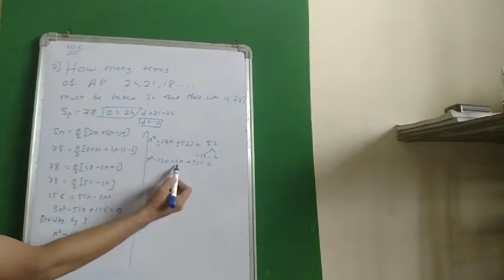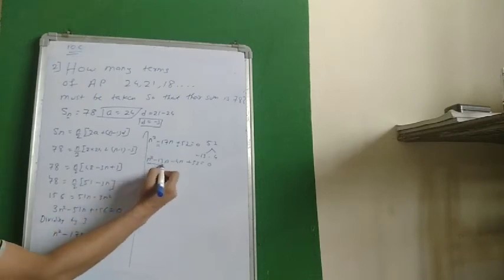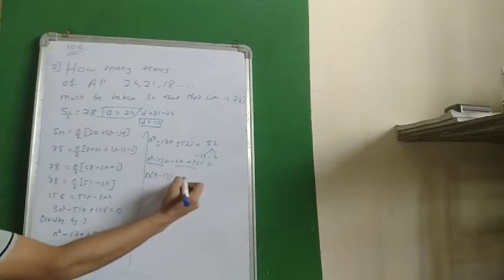Cross check it. Minus 13N minus 4N should give me minus 17N. Yes, it is correct. So we will take N as common. We have N minus 13. Again, N minus 13 over here.